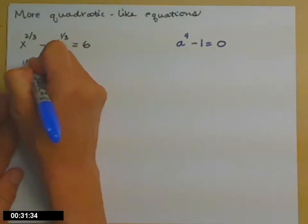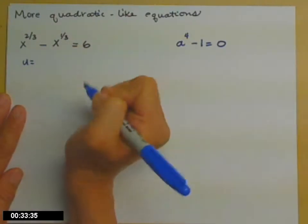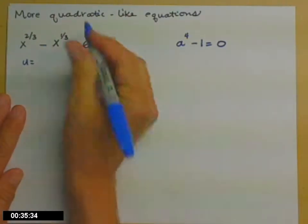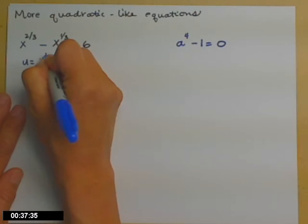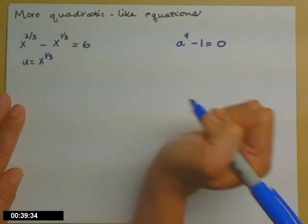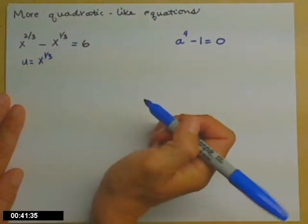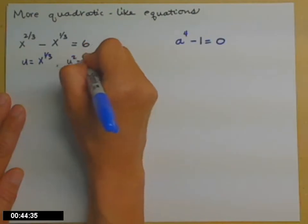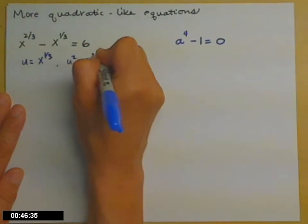So the substitution that you make is you let u, or whatever variable you're going to change into, be the smaller powered term. So u equals x to the one-third, so that u squared equals x to the two-thirds.